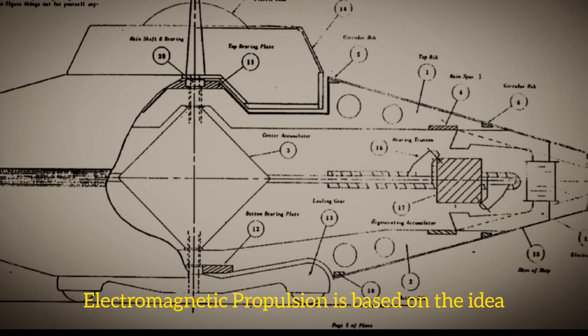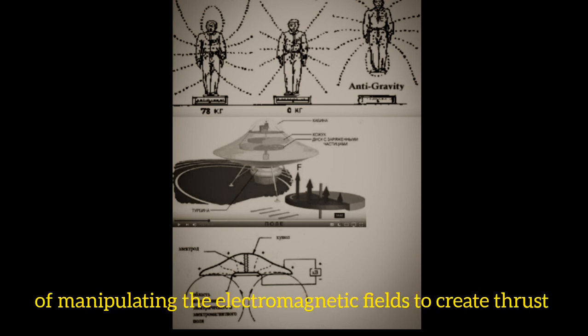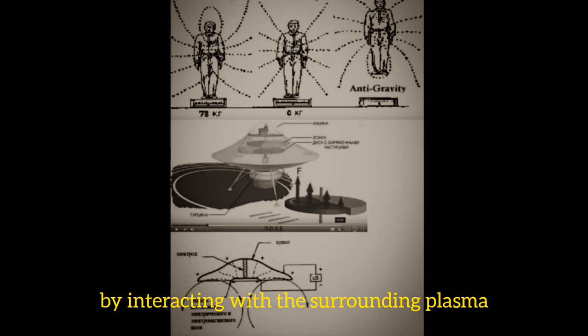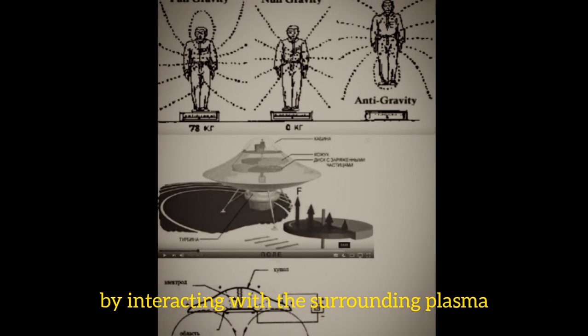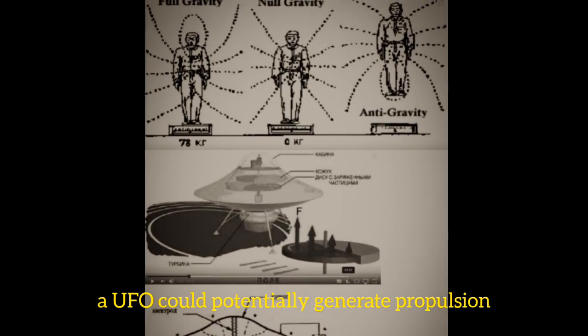Electromagnetic propulsion is based on the idea of manipulating the electromagnetic fields to create thrust. By interacting with the surrounding plasma, a UFO could potentially generate propulsion without relying on traditional engines or fuel.